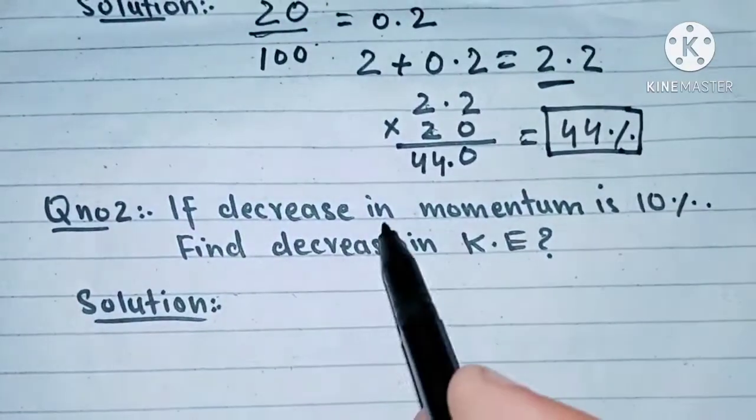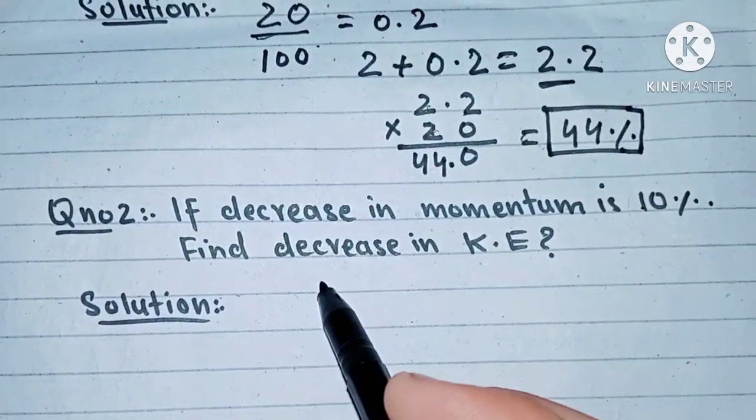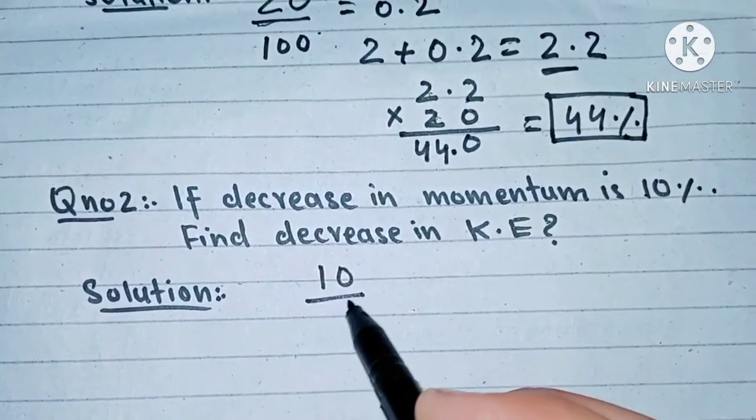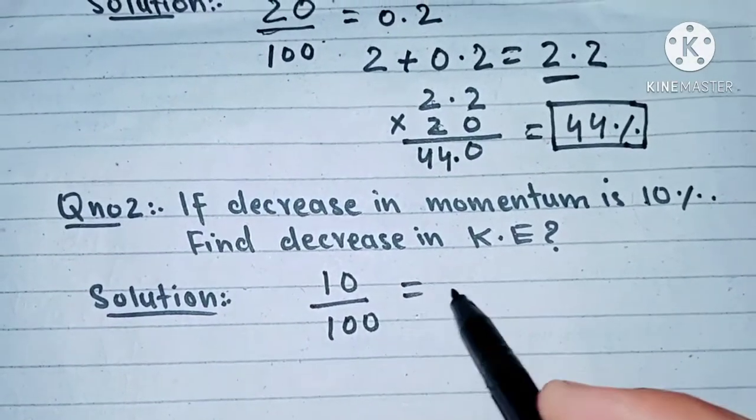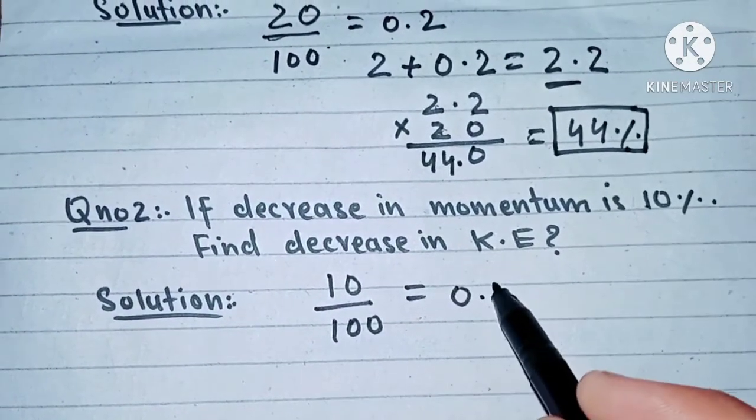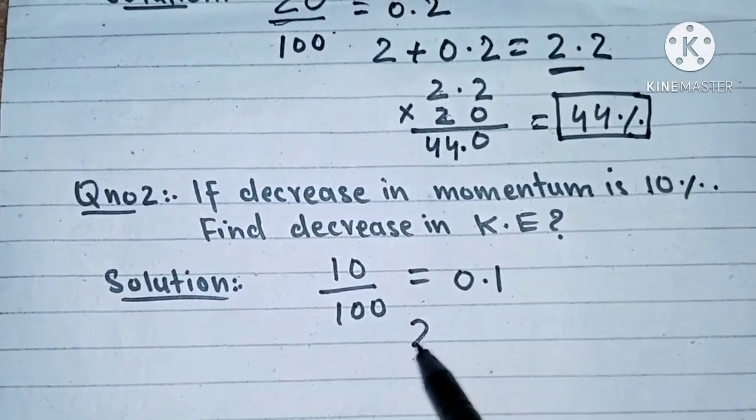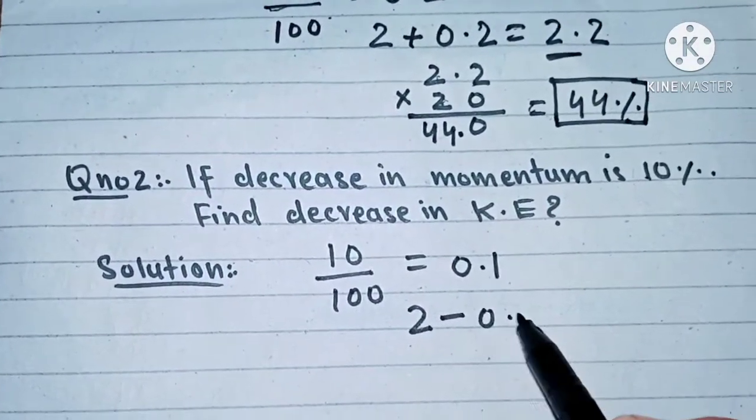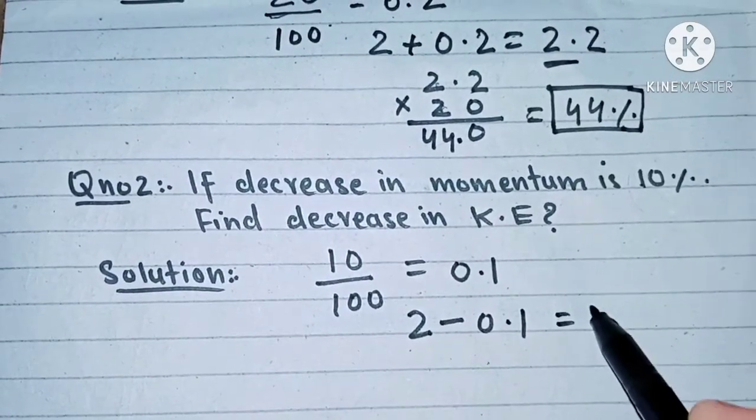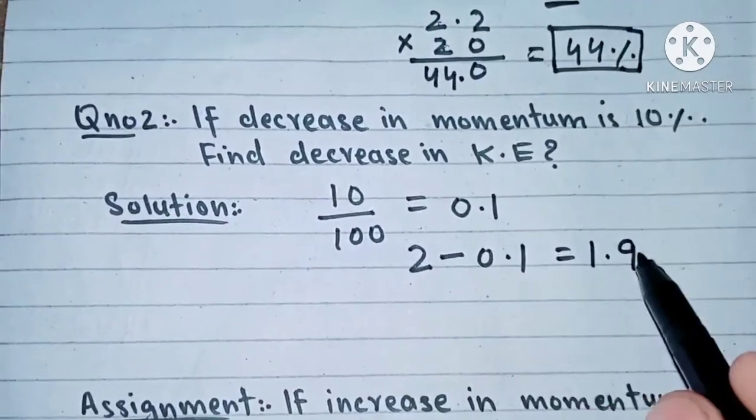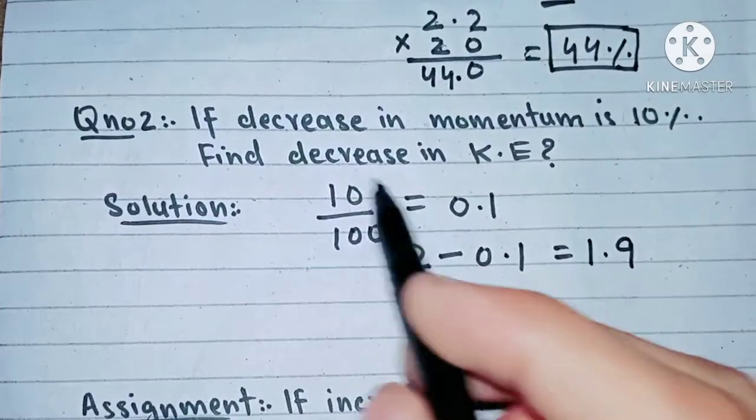You will first divide the given percentage by 100, like 10 divided by 100. This becomes 0.1. Then 2 minus 0.1, this becomes 1.9. And now you will have to multiply 1.9 by the given percentage, 10.